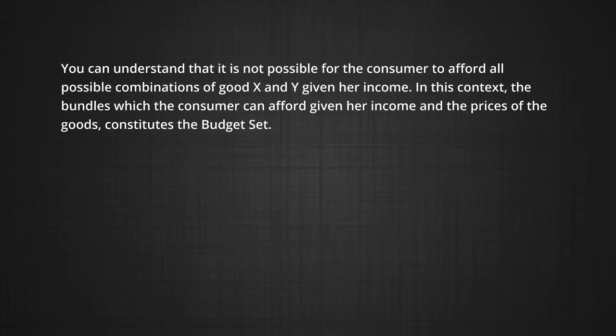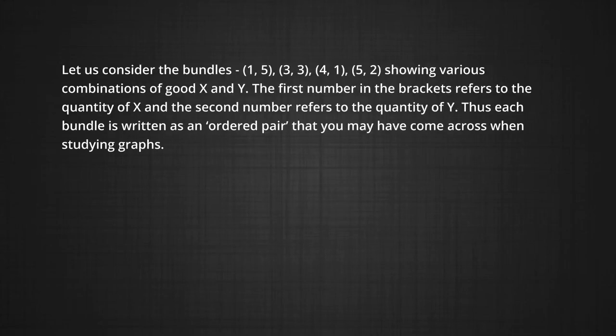The bundles which a consumer can afford, given her income and the prices of those goods, constitute the budget set. Let us consider the bundles (1,5), (3,3), (4,1), (5,2), which show the various combinations of good X and good Y. The first number in brackets refers to the quantity of X, and the second number refers to the quantity of Y. Thus, each bundle is written as an ordered pair. You may have come across ordered pairs when doing graphs in mathematics.